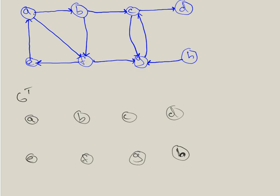In the original graph we see an arrow from A to B, so we reverse that to go from B to A. Same from A to E — we reverse that to E to A, and so on. Now you get the picture of what the transpose of the graph means.